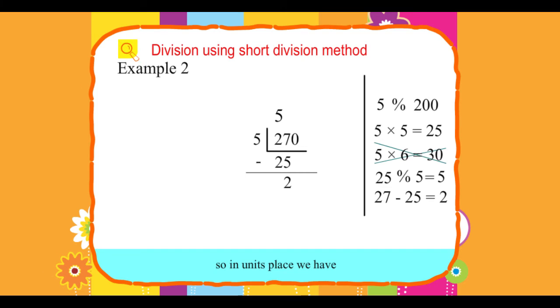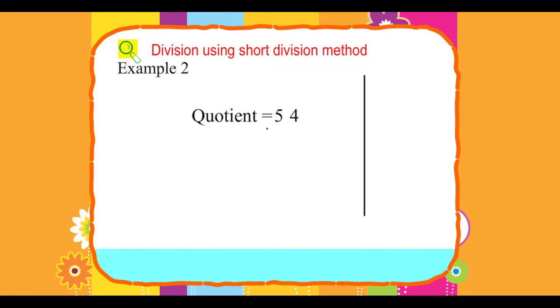So, in the unit's place, we have 20 ones plus 0 ones equals 20 ones. 5 into 4 equals 20, or 20 divided by 5 equals 4. Therefore, the quotient equals 54.